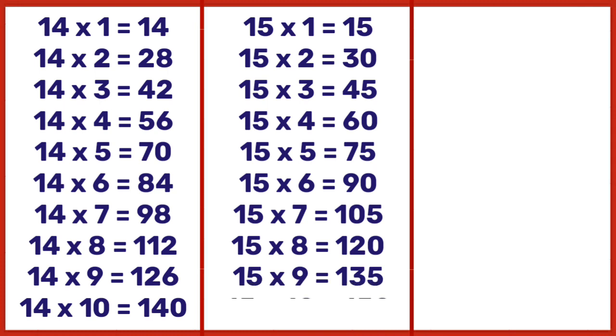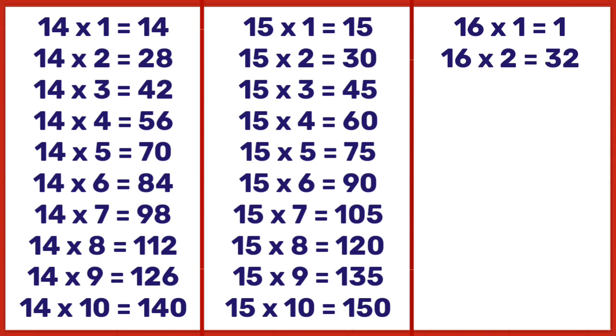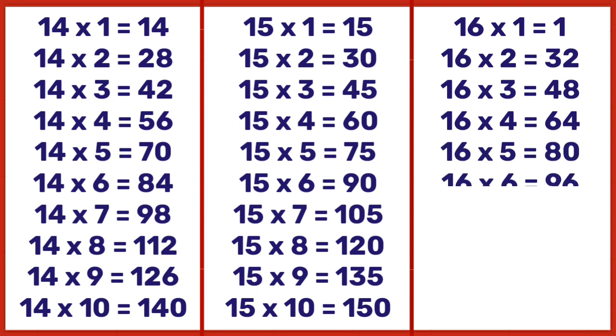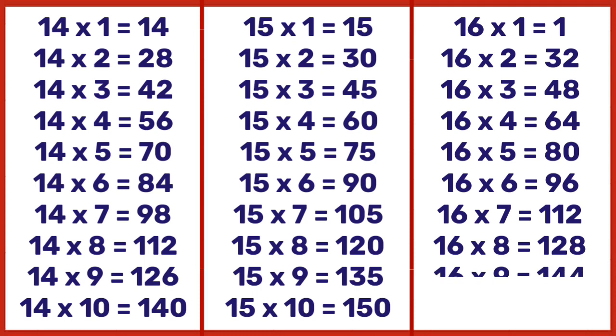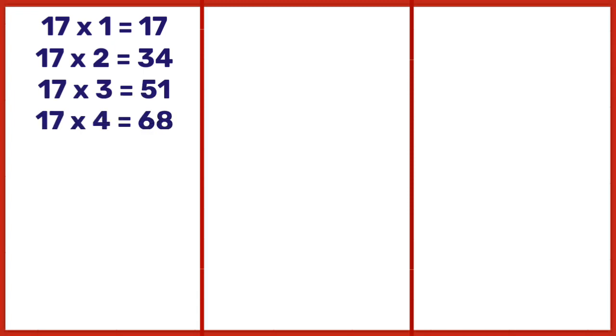15 nines are 135, 15 tens are 150. 16 ones are 16, 16 twos are 32, 16 threes are 48, 16 fours are 64.